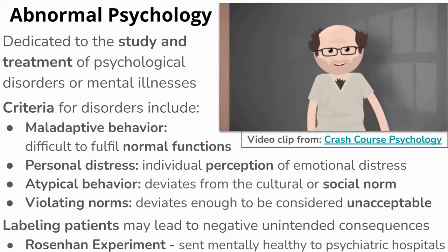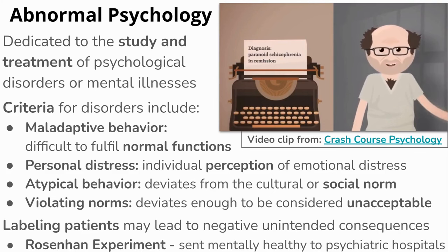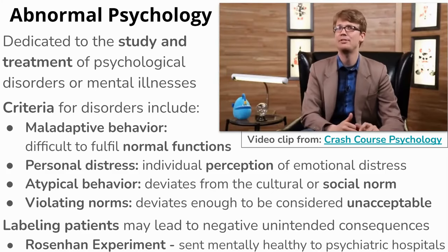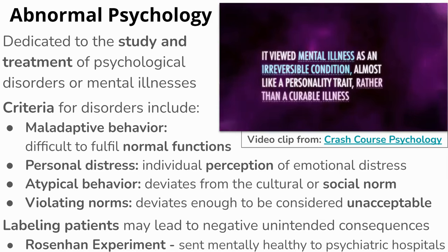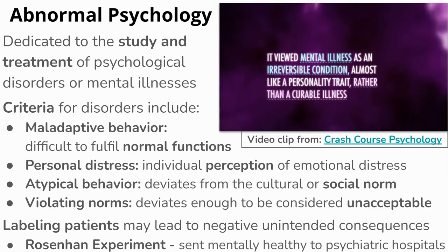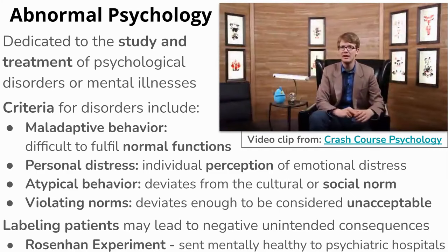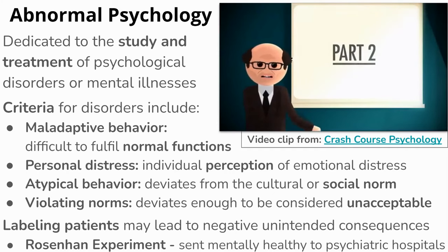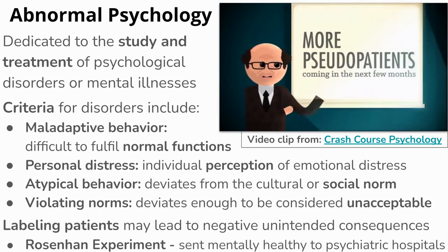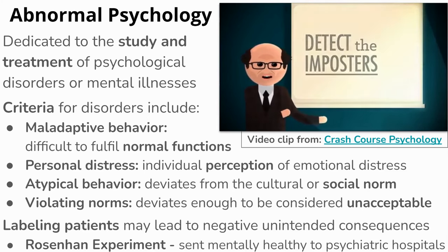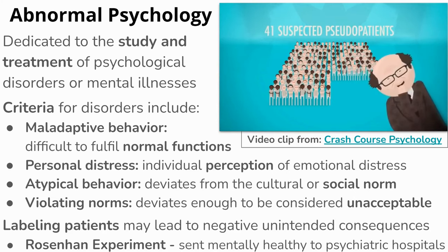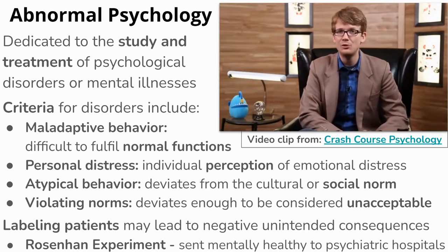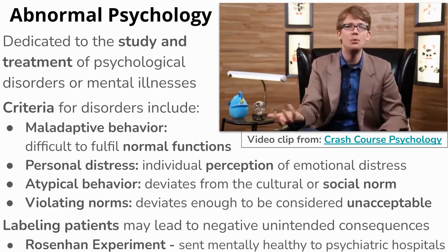They were forced to take psychotropic medication, which they sneakily spit out, and were eventually discharged with a diagnosis of paranoid schizophrenia in remission. Being dubbed 'in remission' isn't the same as being labeled sane — one of Rosenhan's criticisms. The system viewed mental illness as an irreversible condition, almost like a personality trait, rather than a curable illness. In part two, Rosenhan told a teaching hospital he'd be sending pseudo-patients their way and challenged staff to detect impostors. Out of 193 new patients, 41 were identified as likely pseudo-patients — but Rosenhan never actually sent any. He concluded that diagnoses often revealed less about patients themselves and more about their situation.